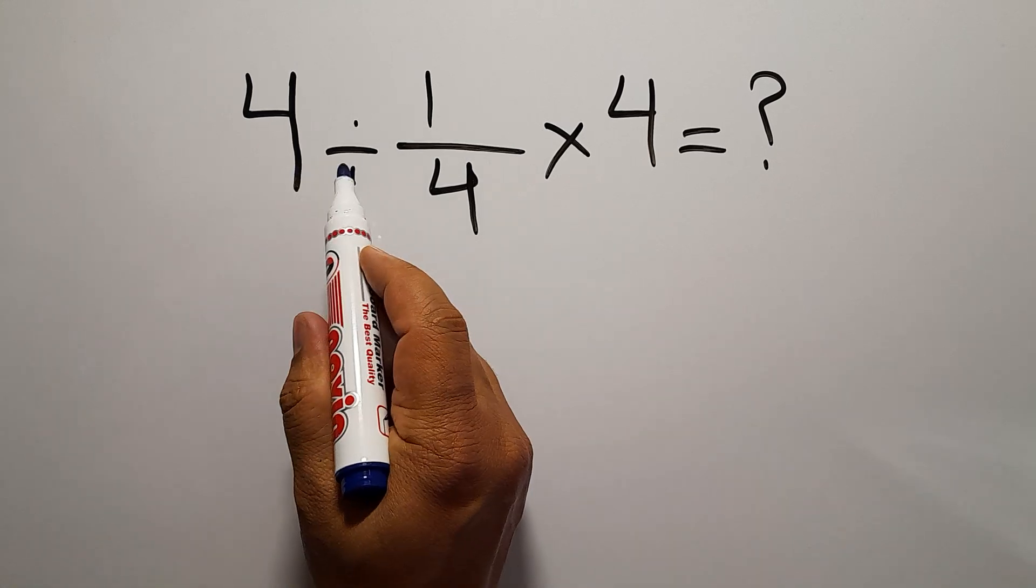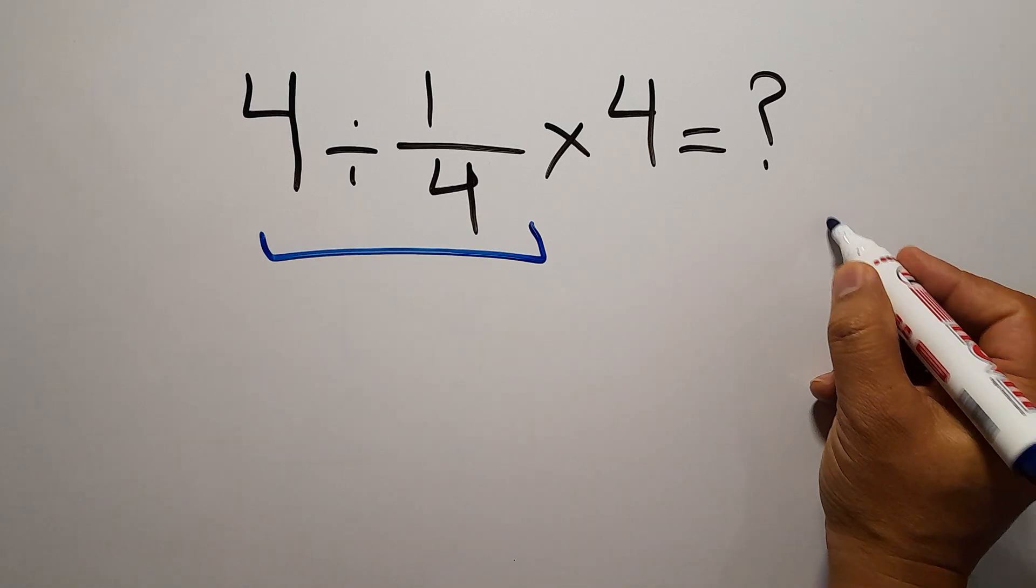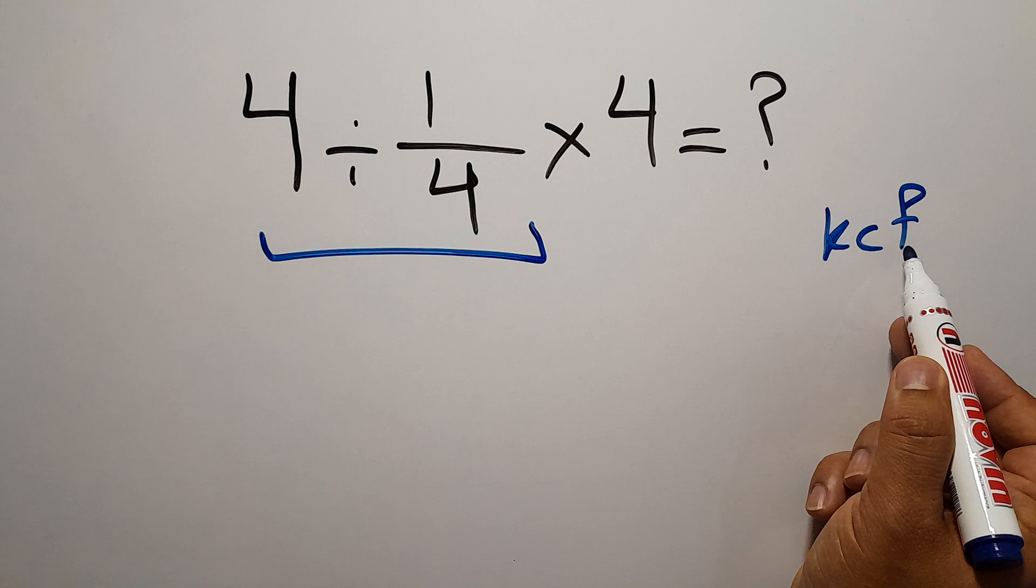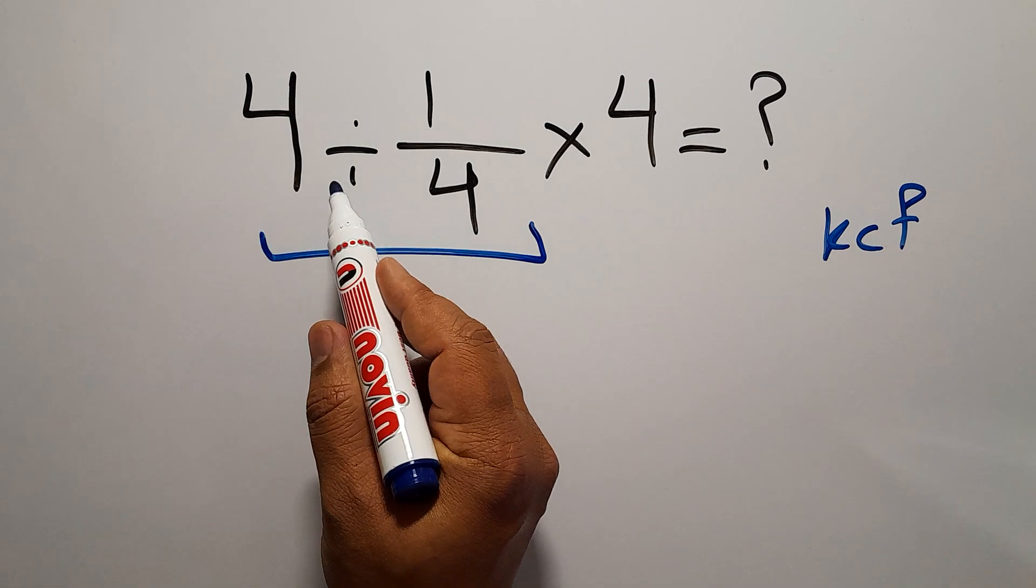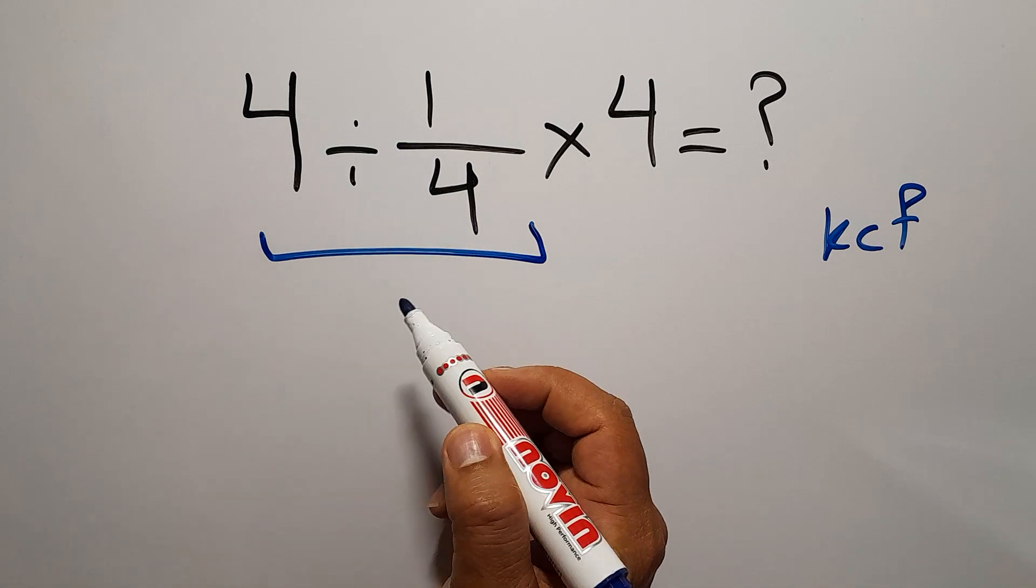Let's do it. 4 divided by 1 over 4 according to the KCF rule. K stands for Keep, C stands for Change, and F stands for Flip. Keep the first fraction, change division to multiplication, and flip the second fraction.